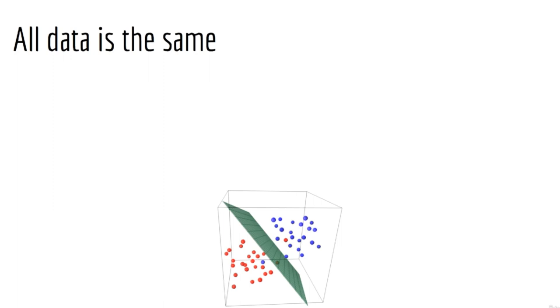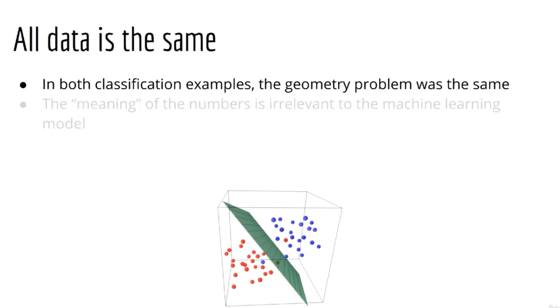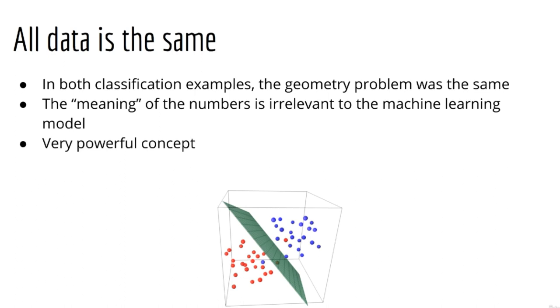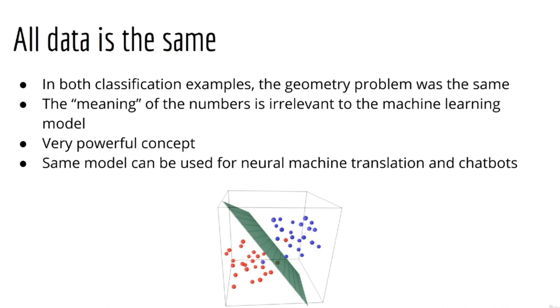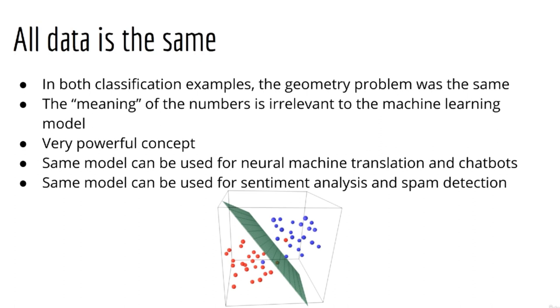And in fact, for our two classification examples, the geometry problem was the same. The only thing that changed was the meaning of the numbers. Of course, machine learning algorithms don't care about these meanings, and so they are essentially irrelevant in the eyes of the machine learning model. That's why we say all data is the same. This becomes a very powerful concept in the future. For example, the same kind of model used for neural machine translation can also be used for a chatbot. The same kind of model used for sentiment analysis can also be used for spam detection. Thinking in this way essentially gives you machine learning superpowers.